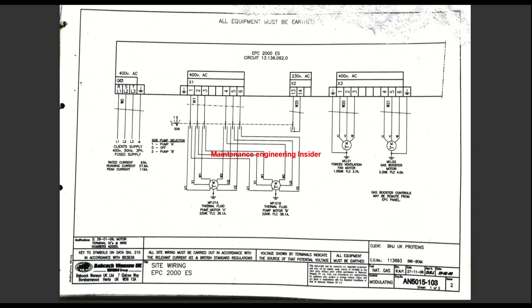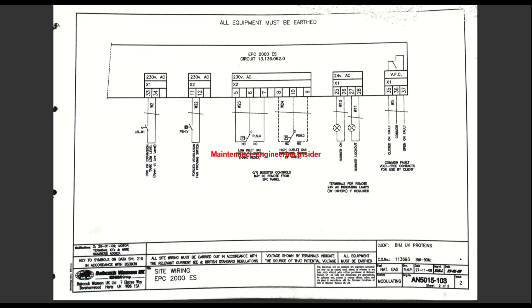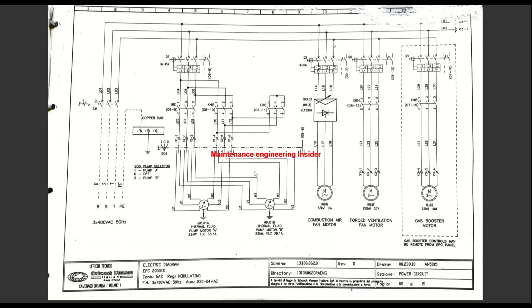These thermal fluid pumps are not running. There are two thermal fluid pumps — pump A and pump B — each with similar characteristics: 22 kilowatts and 38.1 amps. These two pumps are not meant to run together; they are switched by a selector switch in position one, zero, or two. In zero it's off; in one it runs pump A; in two it runs pump B. We're not able to get either of them to run, so we want to know why.